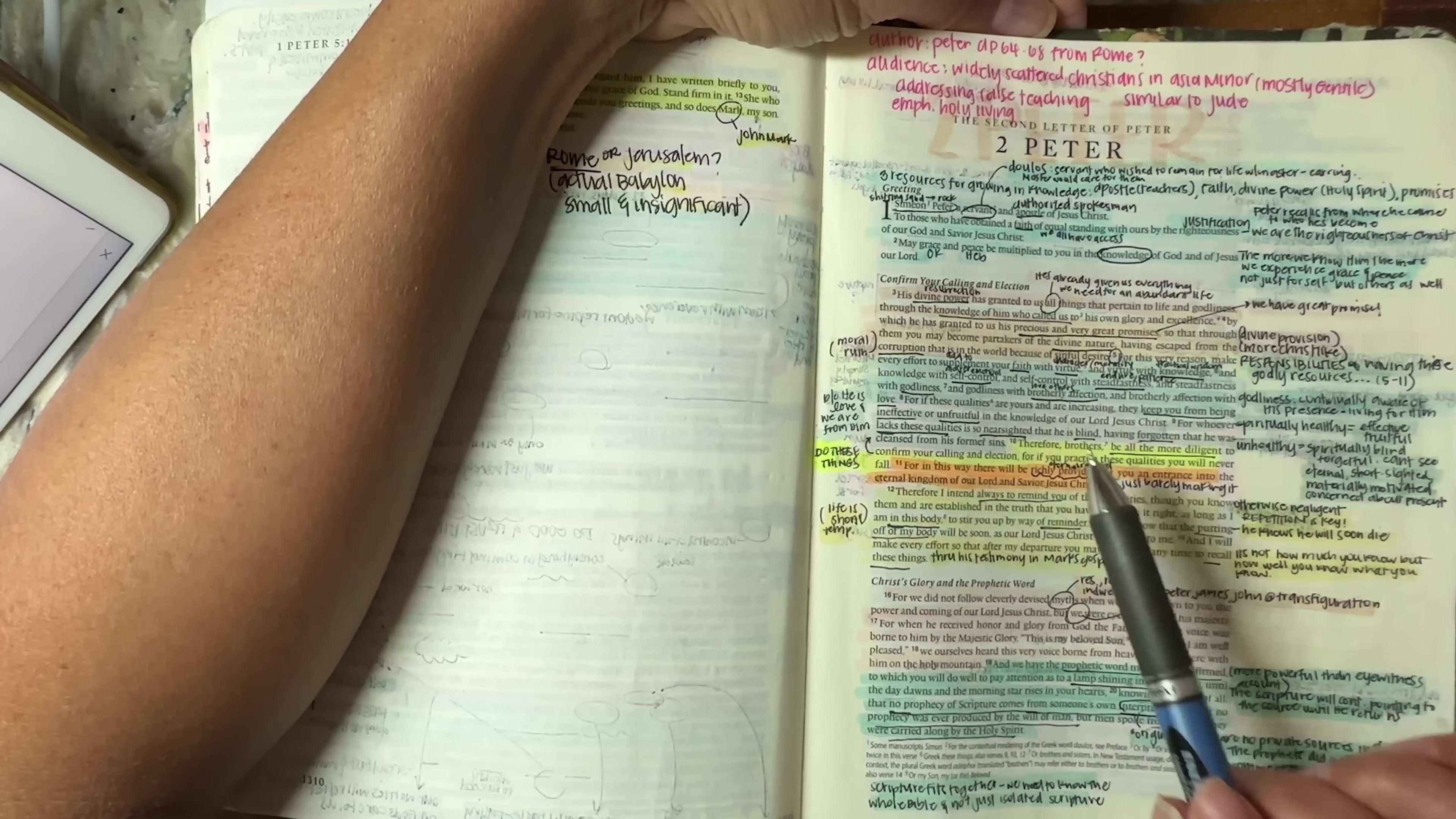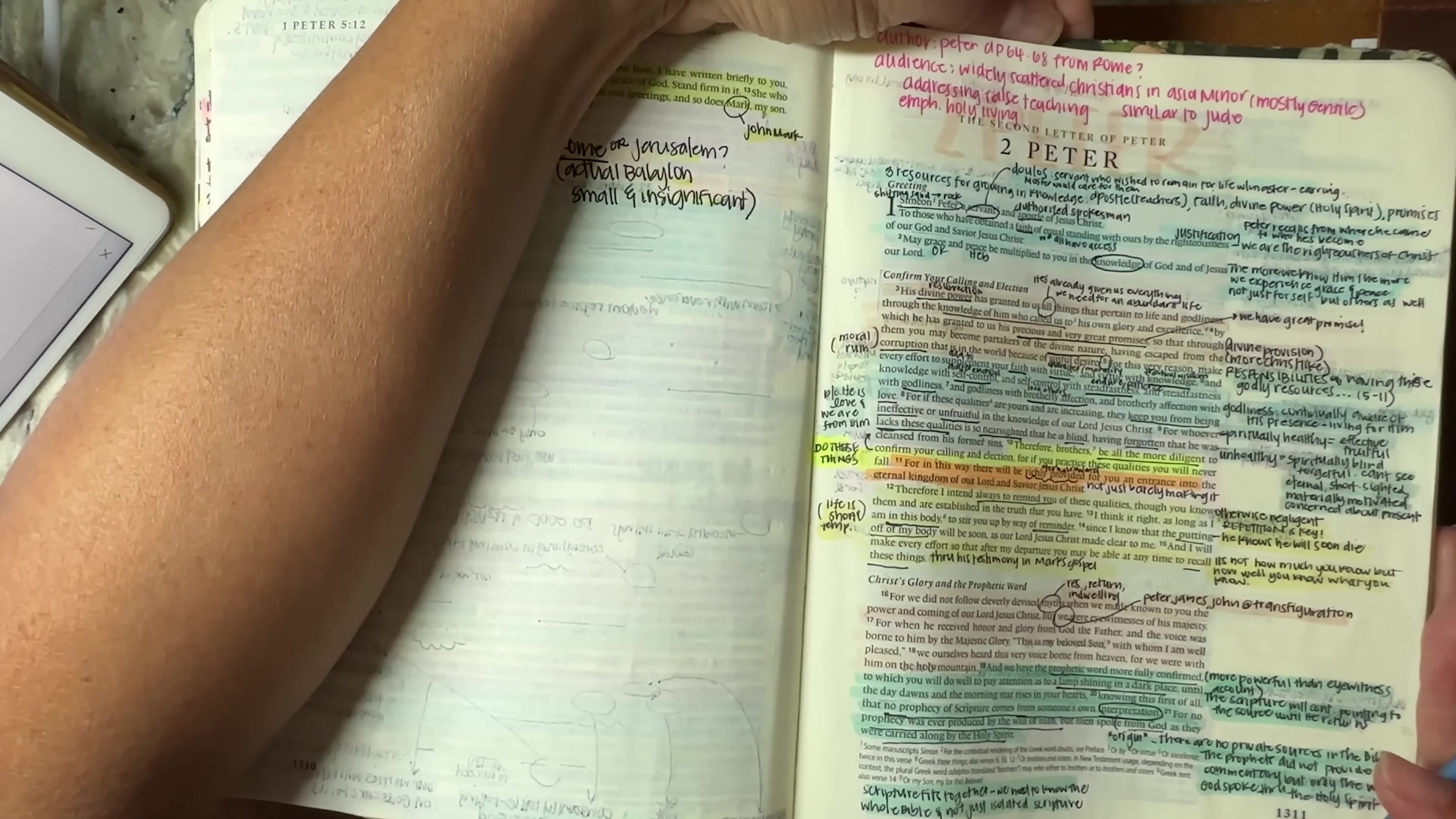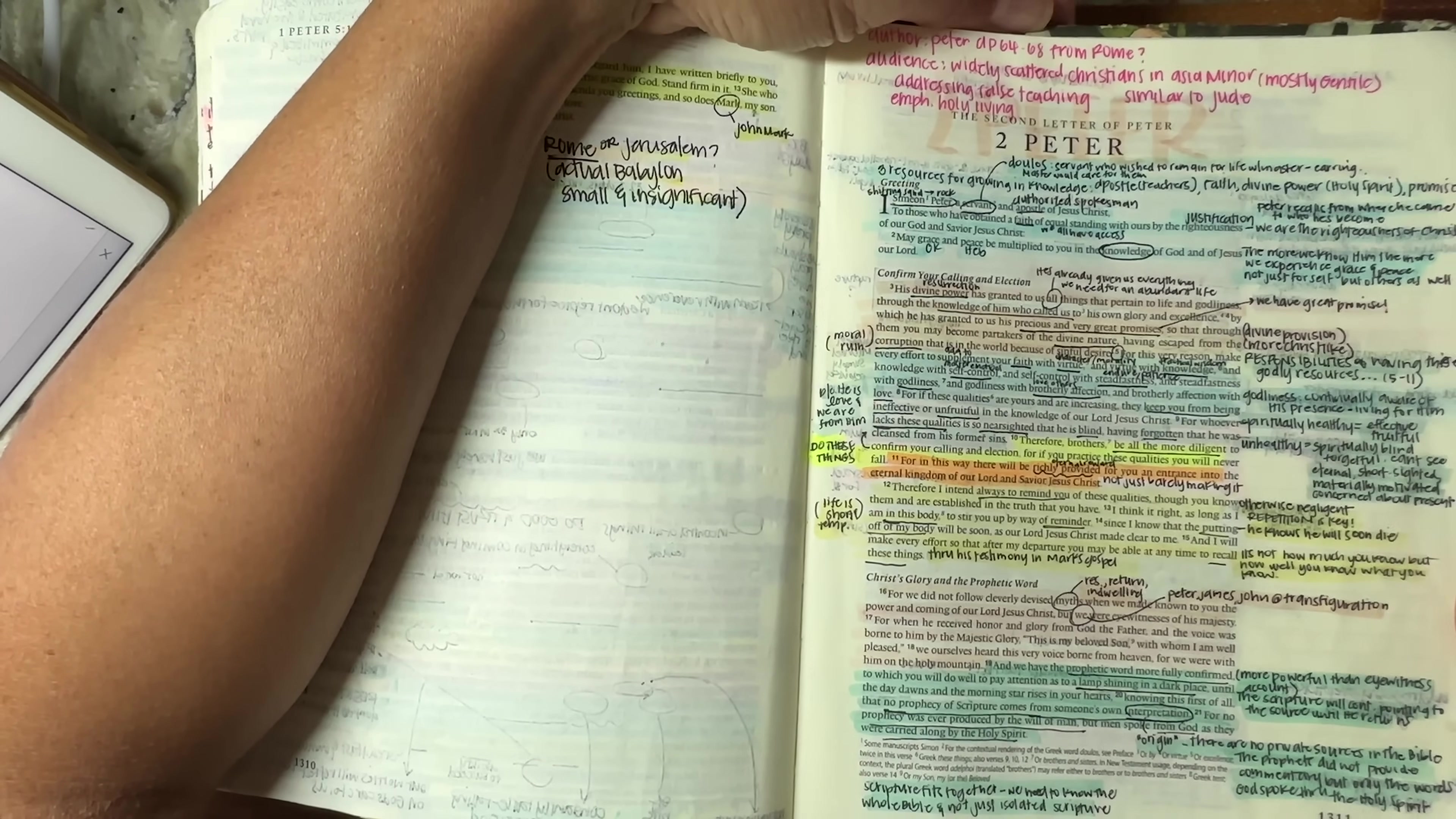So we are starting off here in 2 Peter. We're going to complete this book as well as the book of Jude, and then like I said, I will come back with day 360 and 361 hopefully in the next video. But let's go ahead and pray, prepare our hearts as we get into the Word.